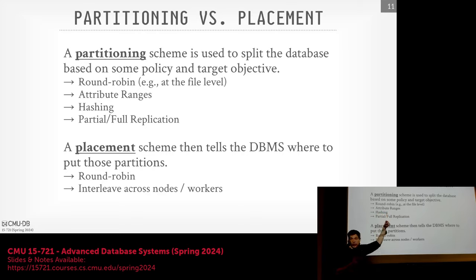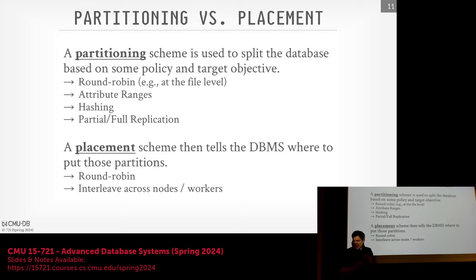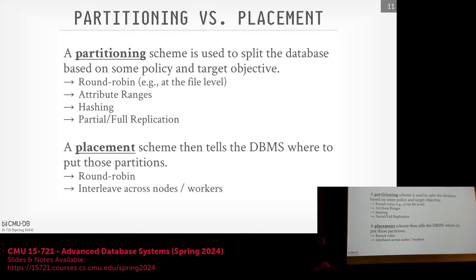If you're doing round-robin partitioning at the file level, it literally is: file one goes to you, file two goes to him, file three goes to him. Files are assumed to be roughly uniform in size. For degenerate cases like a mix of one-gigabyte files and a one-terabyte file, you could assign the same file to different nodes and within that file say row groups zero to five go to this node, six to ten to that one. Partitioning at the row group level makes more sense because Parquet row groups are roughly similar in size.